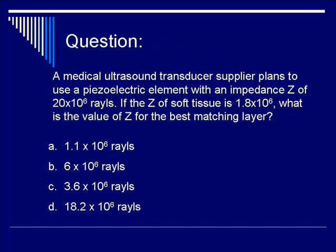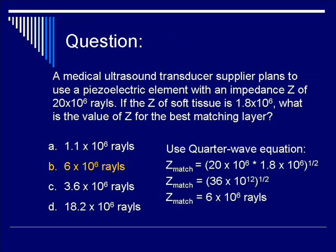The correct answer is B, 6×10⁶ rayls. Recall the matching equation for the quarter-wave plate. Z_match equals the square root of Z of the transducer times Z of the soft tissue, which is 20×10⁶ times 1.8×10⁶. The square root of 36×10¹² equals 6×10⁶ rayls.